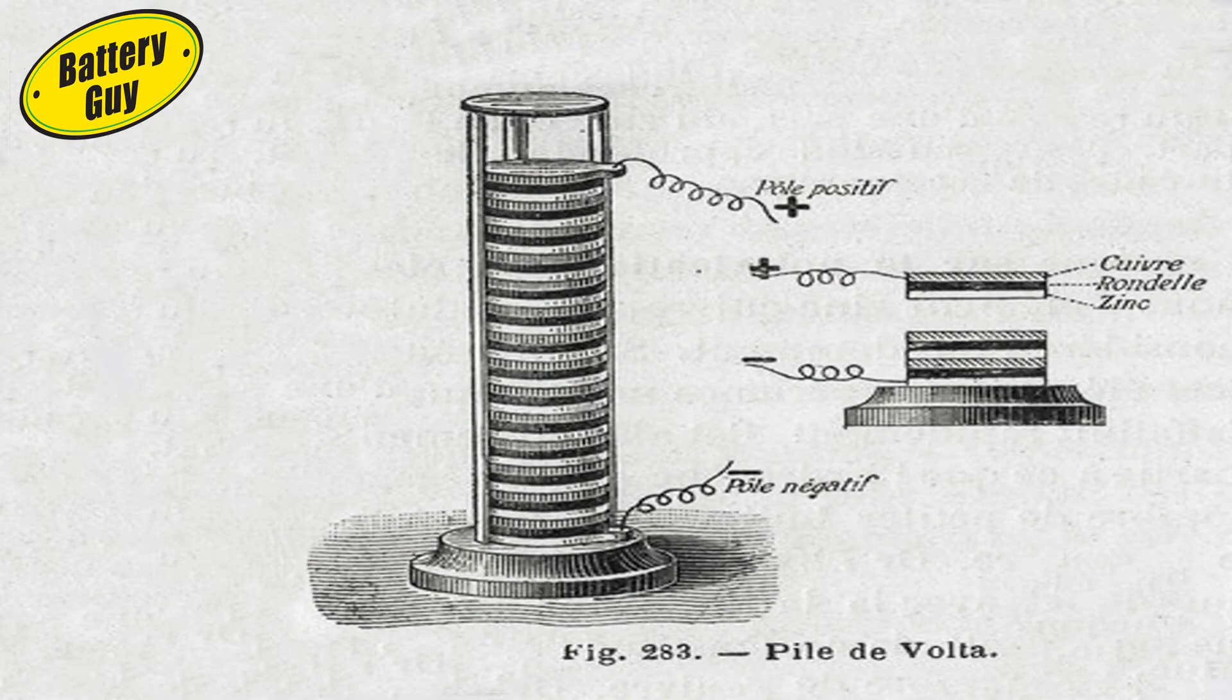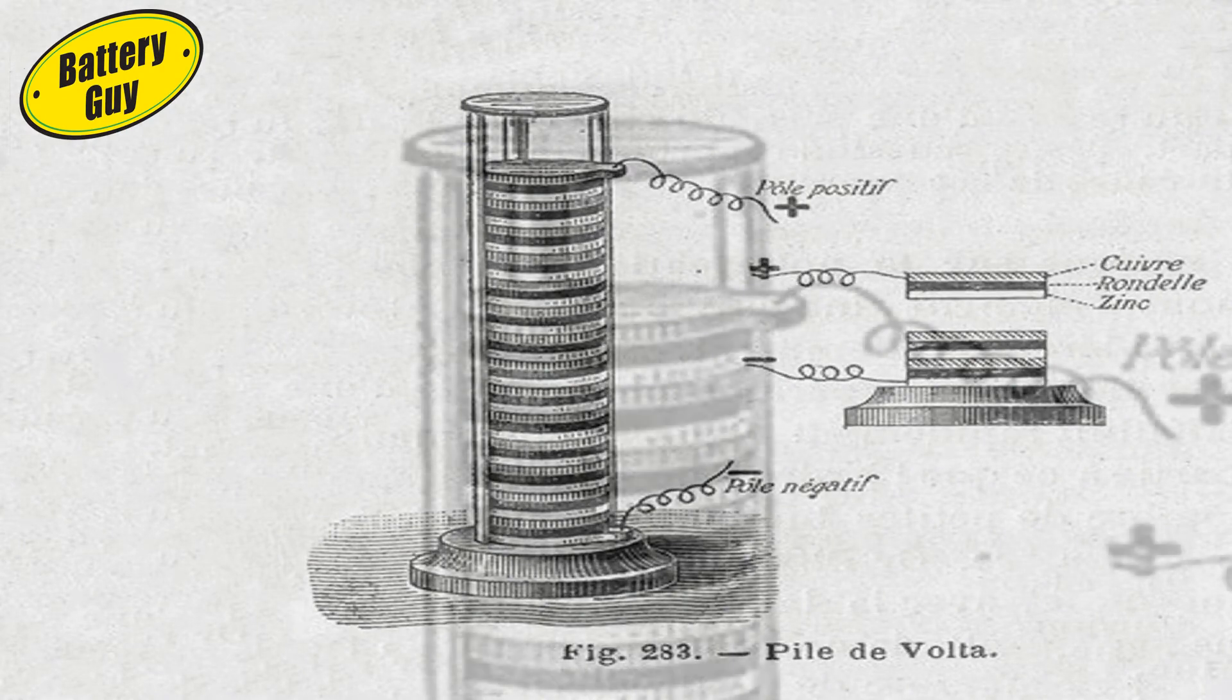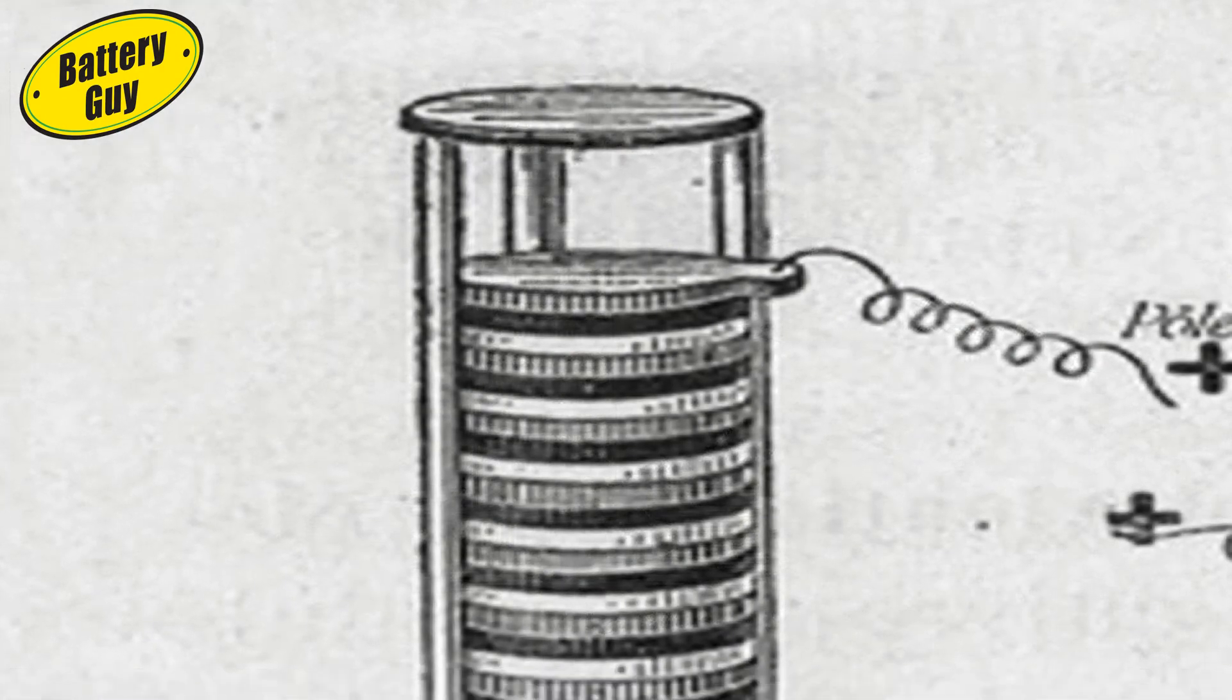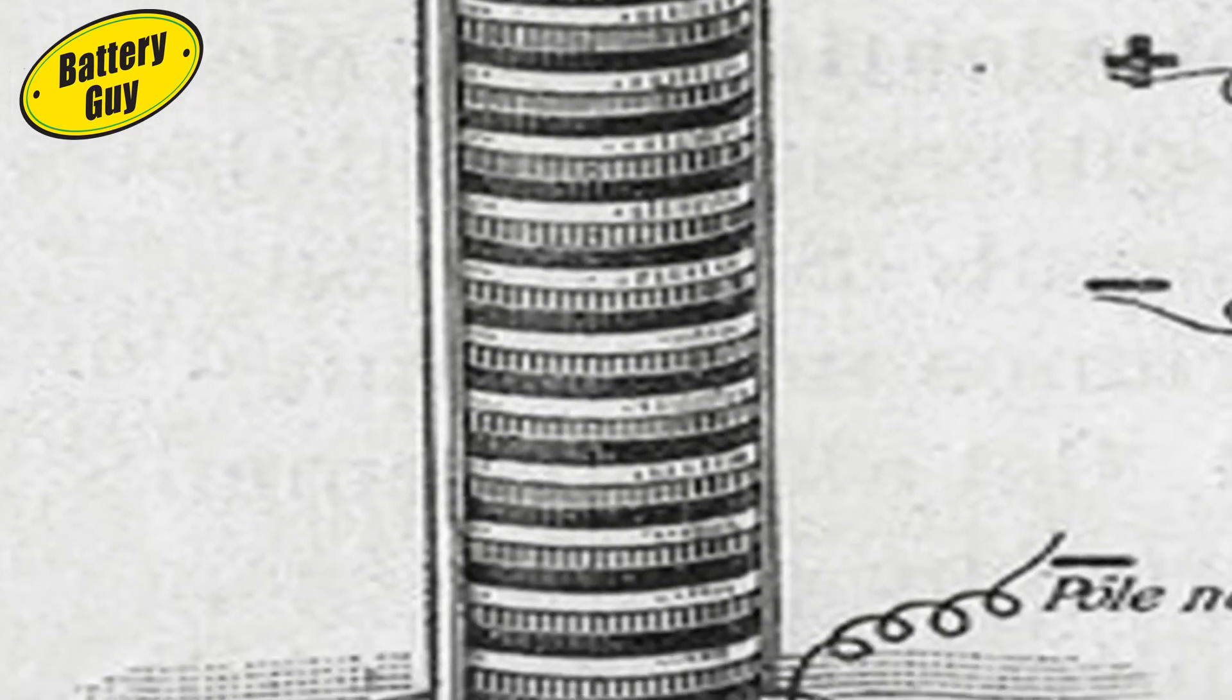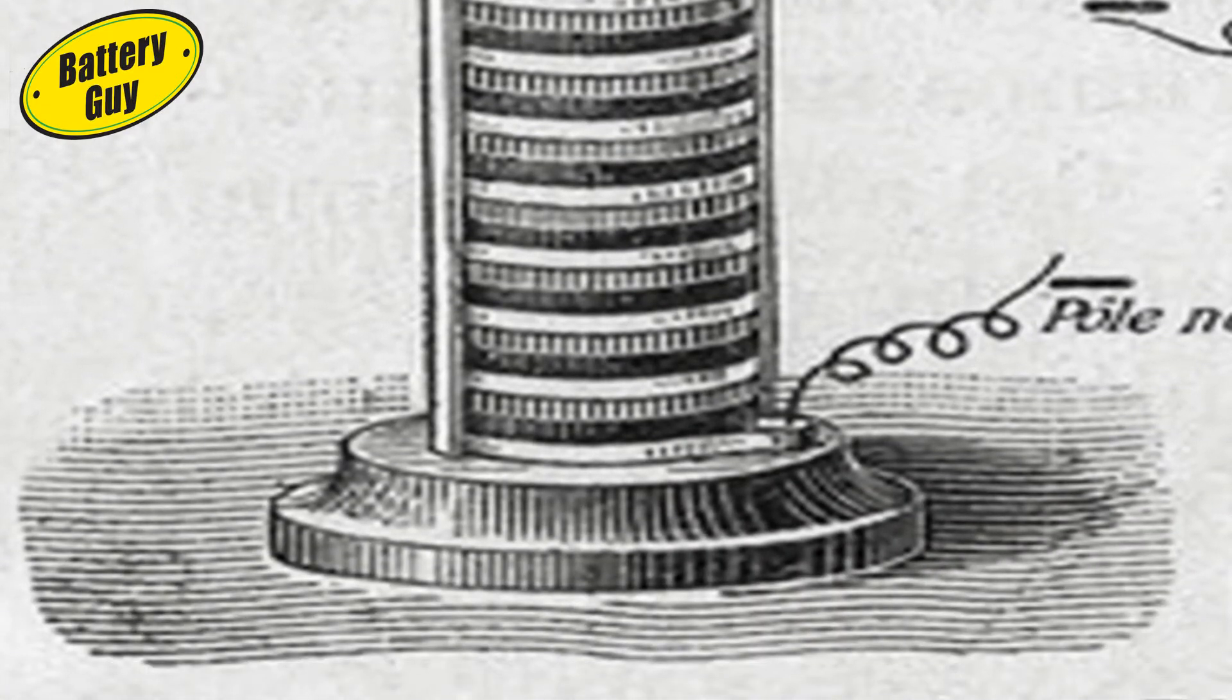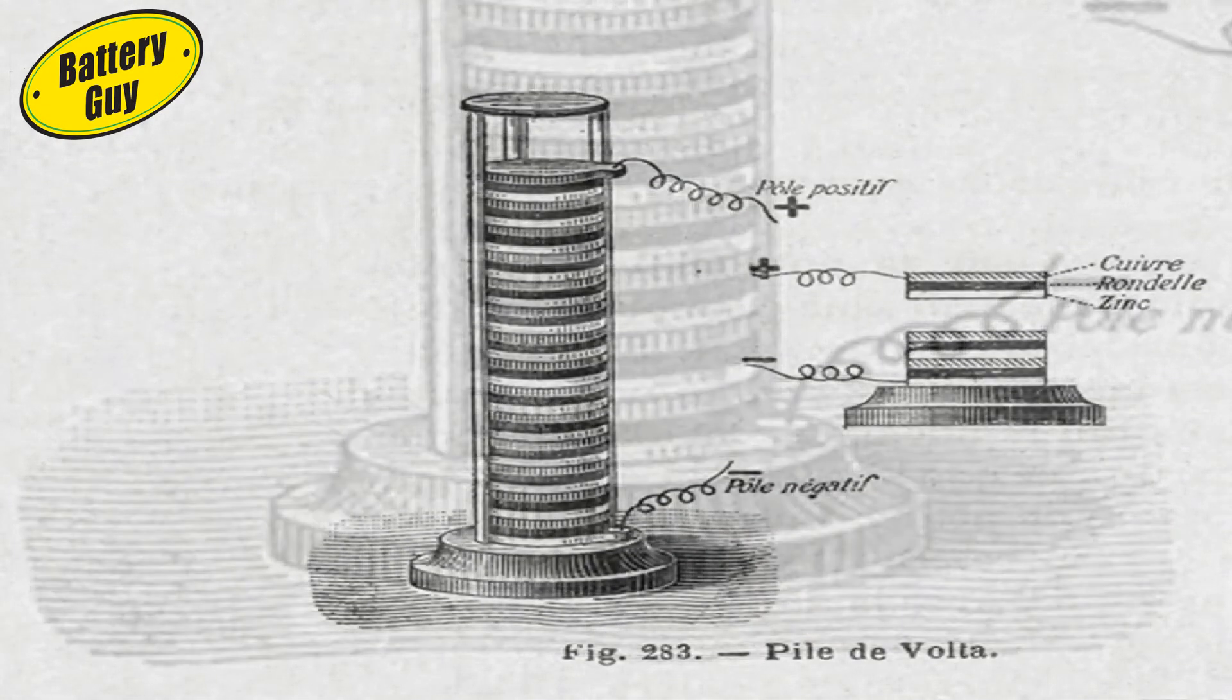Over 200 years ago, Alessandro Volta invented the first battery. He discovered that by placing copper and zinc discs on top of each other and separating each with a brine-soaked cloth, he could create an electrical power source.